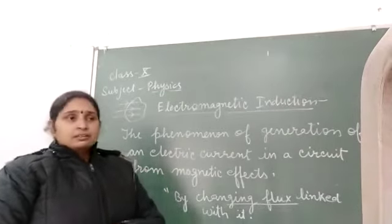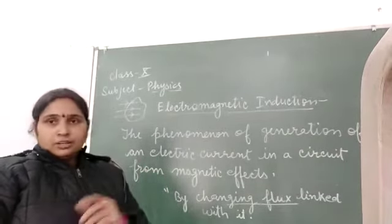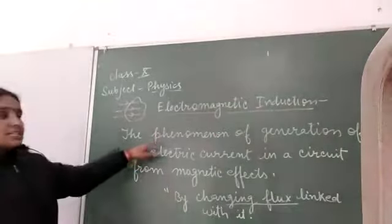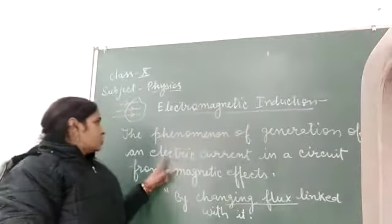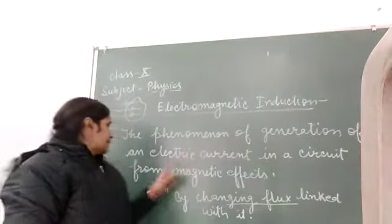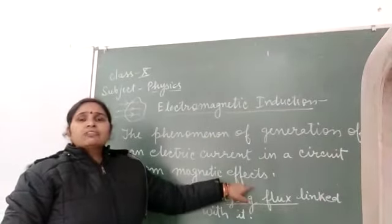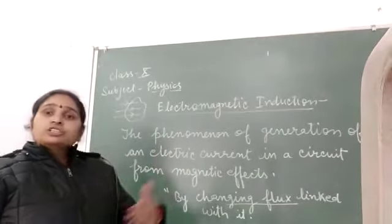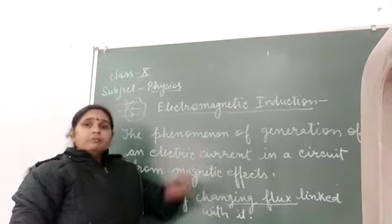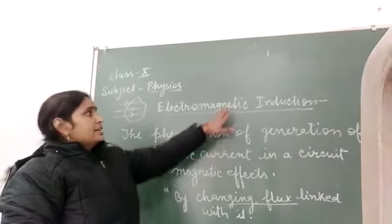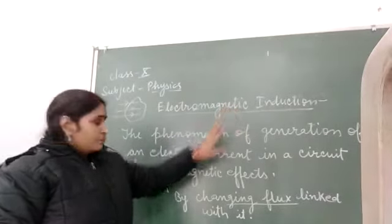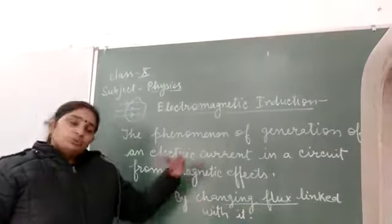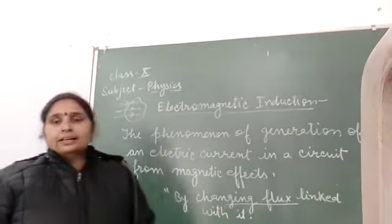This current is known as induced current. So how can we define electromagnetic induction? Electromagnetic induction is a phenomenon of generation of electric current in a circuit from magnetic effects. What are the magnetic effects? Magnetic effects means change in magnetic flux. Whenever a change will be there in the magnetic flux, a current will be induced. And this phenomenon is known as electromagnetic induction — by changing the magnetic flux linked with it.